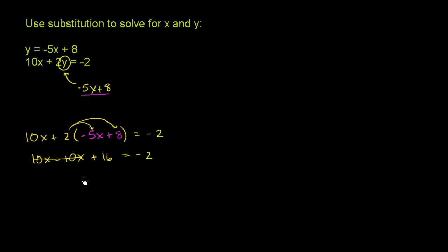And we're just left with 16 equals negative 2, which is crazy. We know that 16 does not equal negative 2. This is an inconsistent result. And that's because these two lines actually don't intersect.